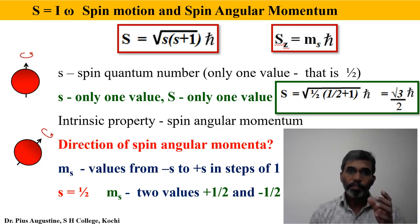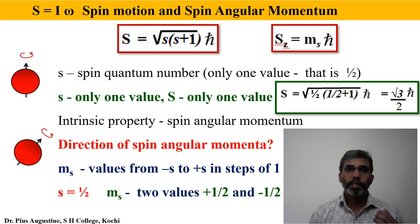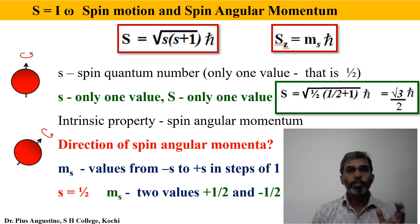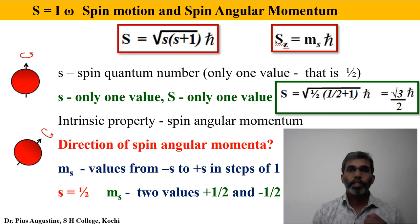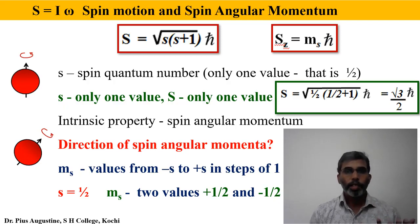In particle physics you will come across other elementary particles — such as protons and neutrons — which are also spin-½ particles, and their existence is also associated with a spin angular momentum of √3/2 ħ.